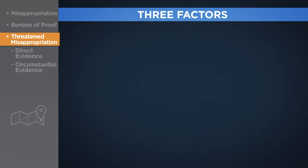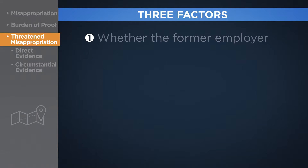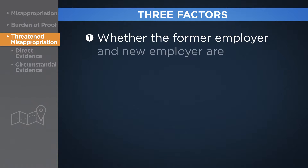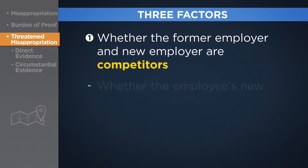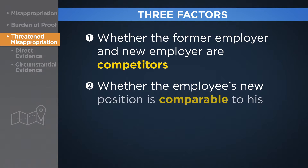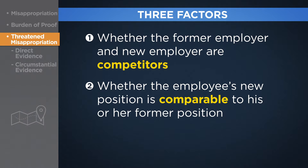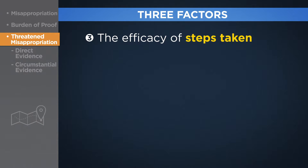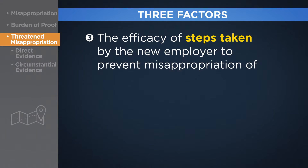When faced with a situation where an employee who has been exposed to trade secrets leaves to work for a new employer, courts typically consider three factors: 1. Whether the former employer and the new employer are competitors. 2. Whether the employee's new position is comparable to his or her former position. And 3. The efficacy of steps taken by the new employer to prevent the misappropriation of trade secrets.